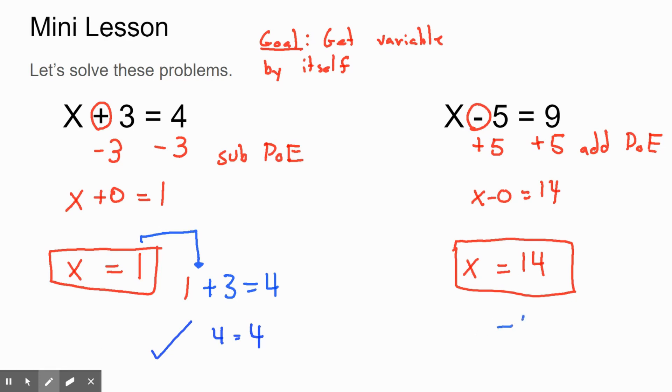And again, we can check our work by plugging our solution into our original equation. We'll see that 14 minus 5 equals 9. And last time I checked, 9 definitely equals 9. So that equation is true, which means x must equal 14. So take a minute, write down anything that you need to. Pause the video if you need to. And then we're going to go on to our you do problem.